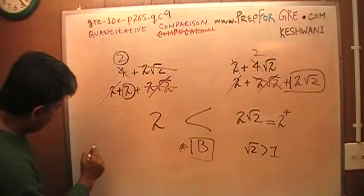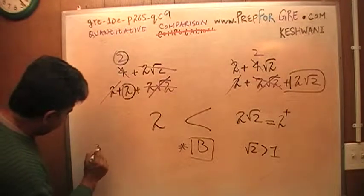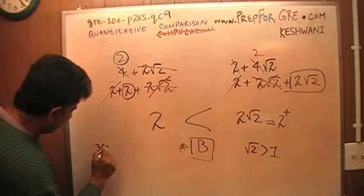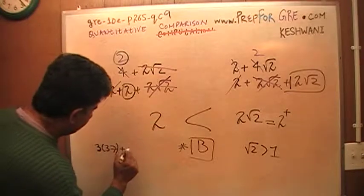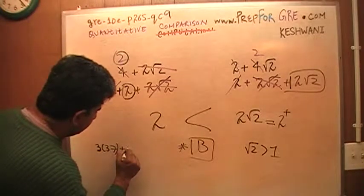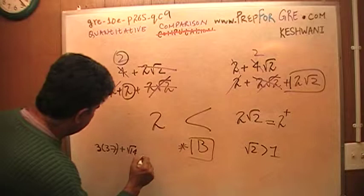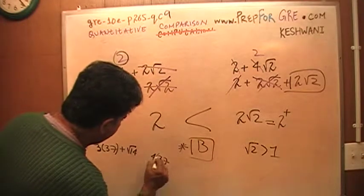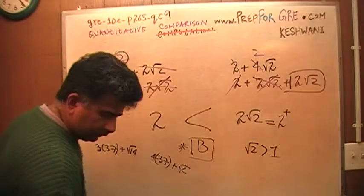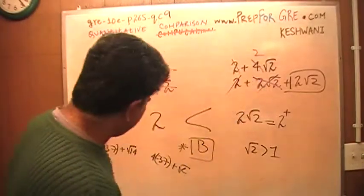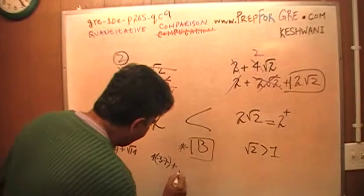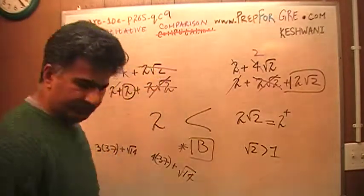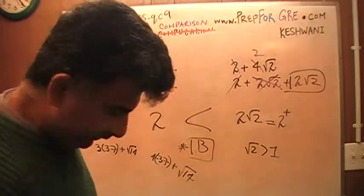Can you tell me which number is bigger? 3 times 37 plus root 14 versus 4 times 37 plus root 14. I'm making it up, you understand? I'm just making it up.